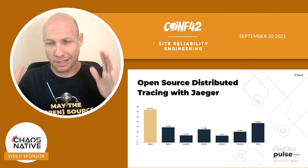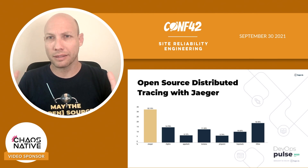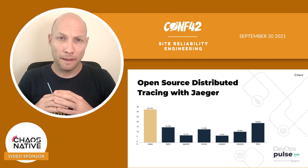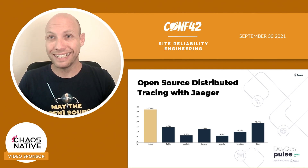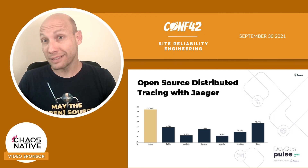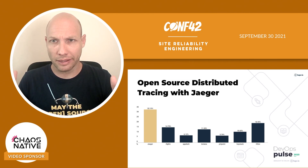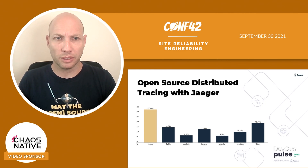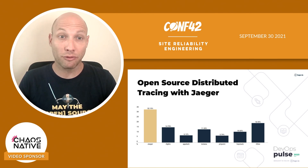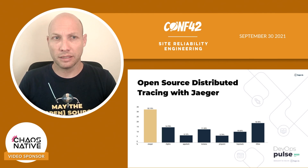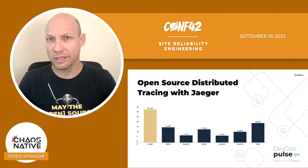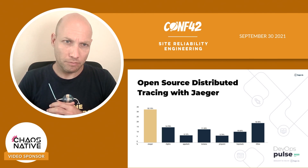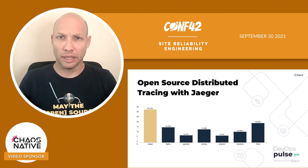We still have Zipkin somewhere in our system, but the main path is Jaeger, which seemed to be the leading choice. And recent surveys still show that Jaeger is by far the leading choice. Here on the screen from DevOps Pulse 2020 — a yearly survey we run around DevOps — you can see that 33% or more of those using tracing use Jaeger.